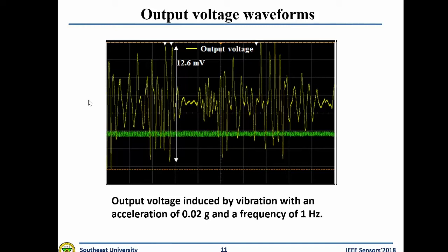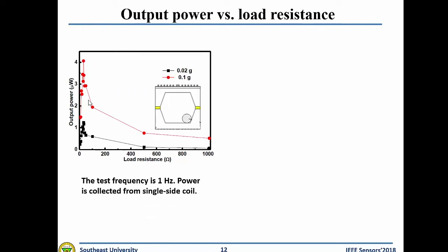The picture shows the output voltage waveform of the energy harvester at an acceleration of 0.02 g and a frequency of 1 Hz. The maximum peak-to-peak voltage is about 12.6 millivolts. When the acceleration is increased to 0.1 g, the voltage rises to 22.8 millivolts. This result proves that the harvester can successfully convert vibration energy into electricity even at very low acceleration. The maximum output power appears when the load resistance matches well with the internal resistance of the coils.